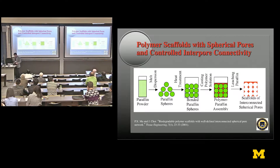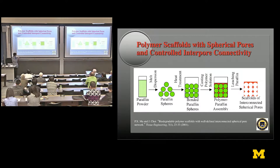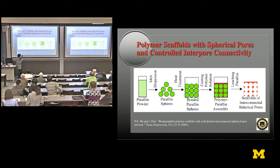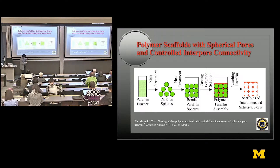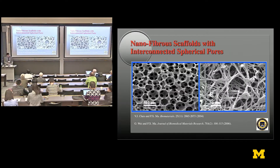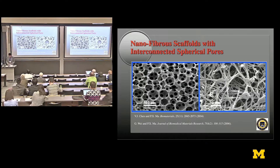Then a graduate student from macromolecular science came and was thinking of spherical pores. We started making spherical particles, assembling them in a mold — which can be any shape, like an ear or nose — melting them a little to stick together, forming a 3D structure, casting the polymer in, and eventually dissolving away the initial particles. We get interconnected three-dimensional pores. At higher magnification, you see the nanofiber structure on the walls of the pores, so cells can get in and interact with extracellular matrix-like materials.